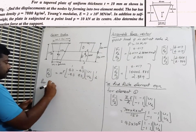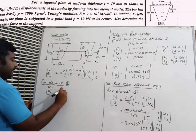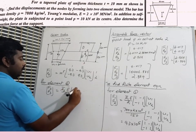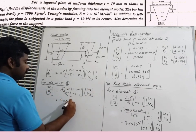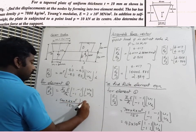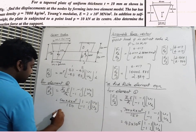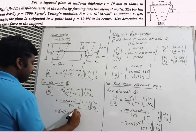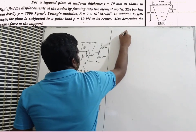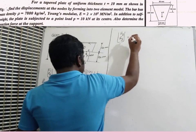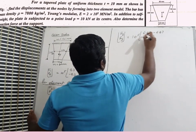For element 2, nodes 2 and 3: {F2, F3} = A2_bar × E / L2 × [1,-1; -1,1] × {U2, U3} = (500 × 2×10⁵ / 150) × [1,-1; -1,1] × {U2, U3} = 6.67×10⁵ × [1,-1; -1,1] × {U2, U3}. Therefore: {F2, F3} = 10⁵ × [6.67,-6.67; -6.67,6.67] × {U2, U3}.